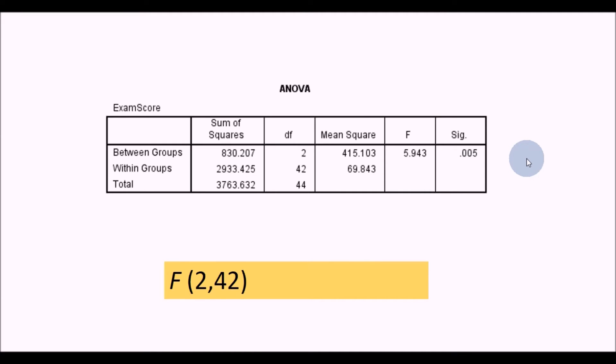Assuming we've got equal variances, what we want to extract from this is the F statistic and the p-value. First of all, the degrees of freedom in a one-way ANOVA - you want to report these two here: the between groups or model degrees of freedom and the within groups or error degrees of freedom. You can ignore the total degrees of freedom. So we report F with the degrees of freedom in brackets equals 5.94, and p is 0.005.